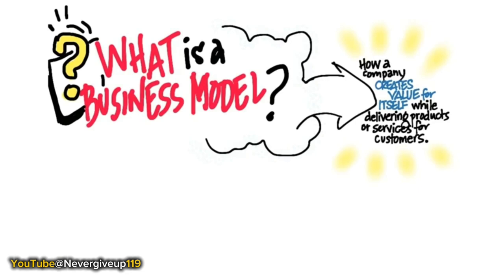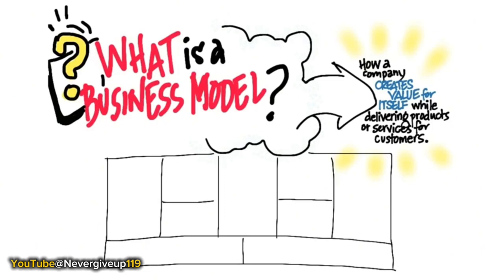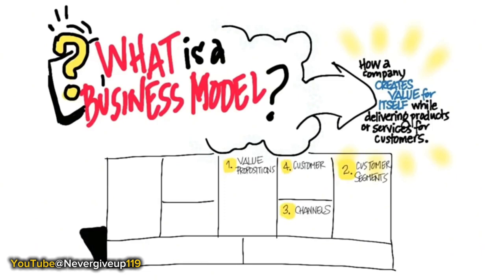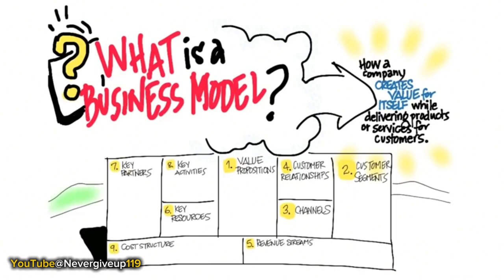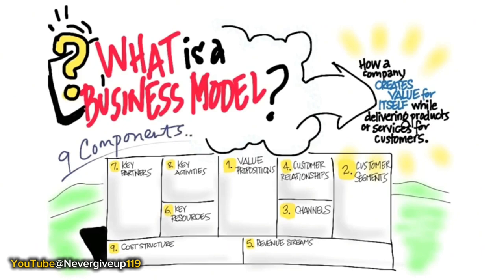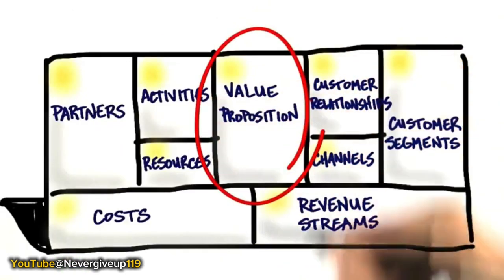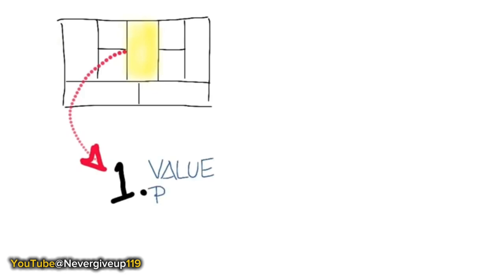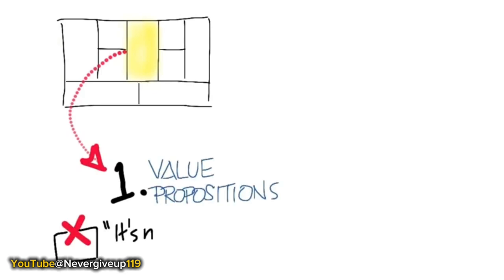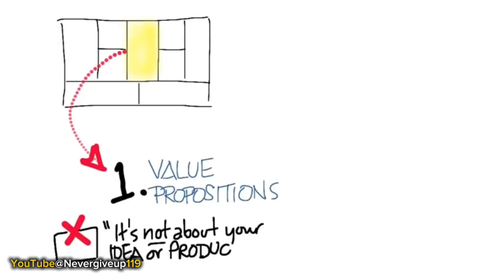We're going to draw a diagram of how to think about all the pieces of a business — nine boxes to describe any company, from the world's largest to a two-person startup starting in your parents' garage. Let's take a look at the first piece: the value proposition. The value proposition answers the question: what are you building and for who?